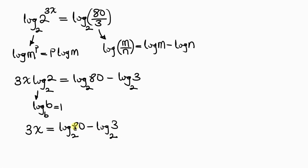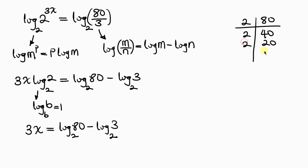Our next step is to break down 80. 80 is a large number, so we do a prime factorization: 80 divided by 2 is 40, 40 divided by 2 is 20, 20 divided by 2 is 10, 10 divided by 2 is 5, and 5 divided by 5 is 1. We have four 2s, so 2 to the 4 times 5 gives 80.